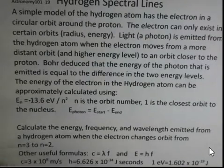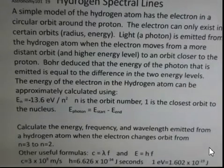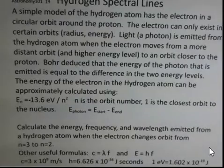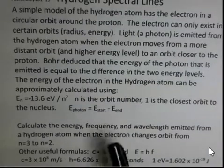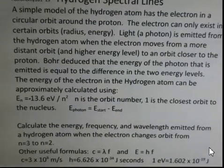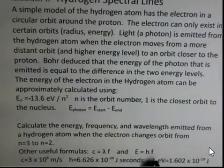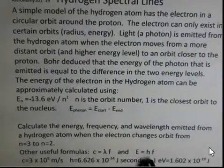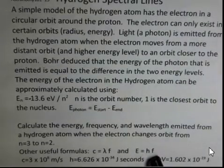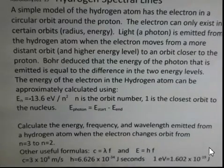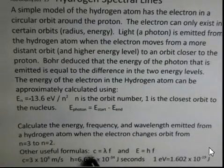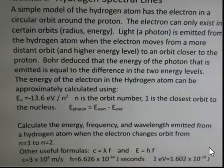So it's moving from a upper energy level, the n equals three, down to a lower energy level, n equals two. To help us complete all our calculations, this will give us the energy. But to complete our calculations, to come up with the frequency, the energy of that photon is equal to Planck's constant times the frequency of the light. And then the wavelength of the light is connected with the speed of light and the frequency.